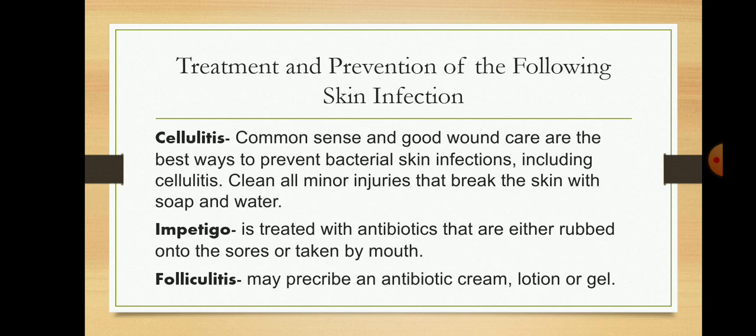The treatment and prevention of the following skin infections: for cellulitis, common sense and good wound care are the best ways to prevent bacterial skin infections, including cellulitis. Clean all minor injuries that break the skin with soap and water. Impetigo is treated with antibiotics that are either rubbed onto the sores or taken by mouth. For folliculitis, a doctor may prescribe an antibiotic cream, lotion, or gel.